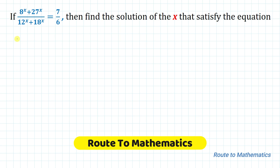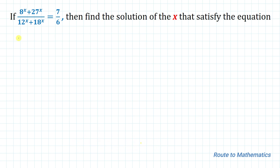Hello everyone, welcome to Root 2 Mathematics. In this video we are going to solve an interesting olympiad question. The given question is: if 8 to the power x plus 27 to the power x, divided by 12 to the power x plus 18 to the power x, equals 7 by 6, then find the value of x that satisfies the equation.